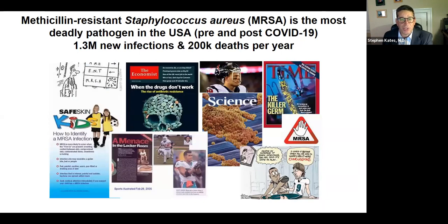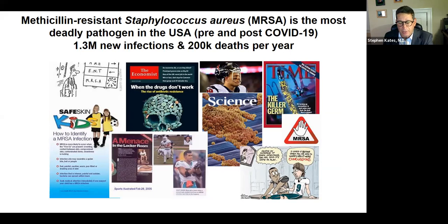Methicillin-resistant Staph aureus, or MRSA, is really probably the most deadly pathogen we deal with routinely. There are 1.3 million new infections a year and an estimated 200,000 deaths. It's made all sorts of magazine covers. Most recently, of course, we've spent a lot of time talking about COVID, but this is a problem that's not going to go away very easily.